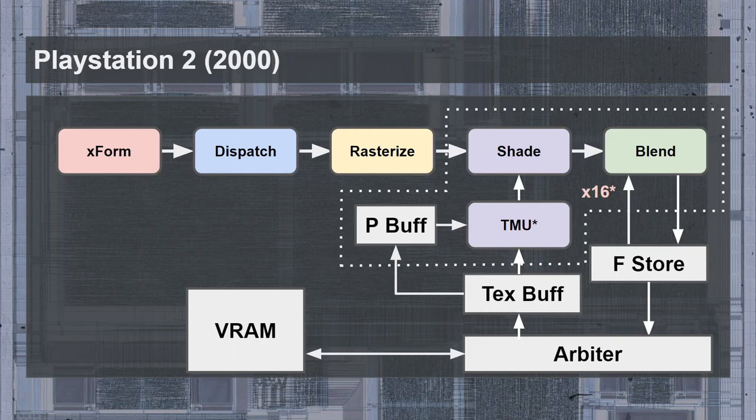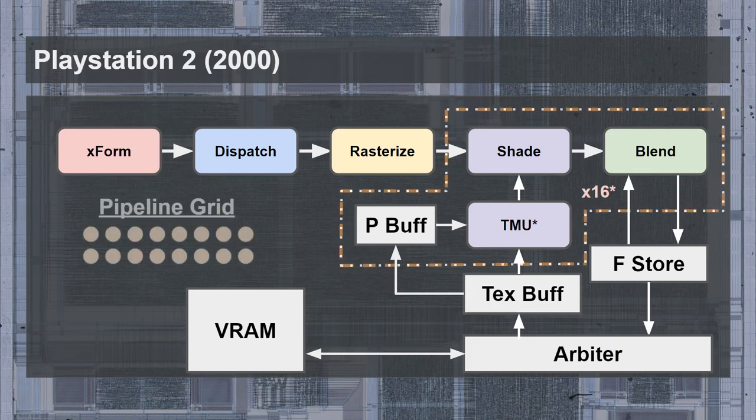Let's start off with the PlayStation 2, since it still resembles the previous GPUs, in that it renders triangles as the commands are sent to it. This is called immediate mode rendering.